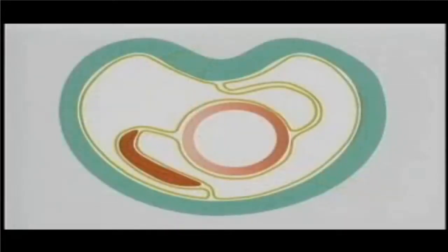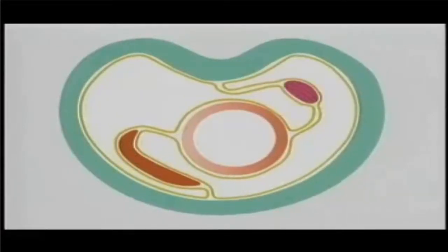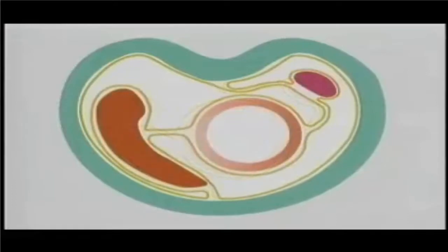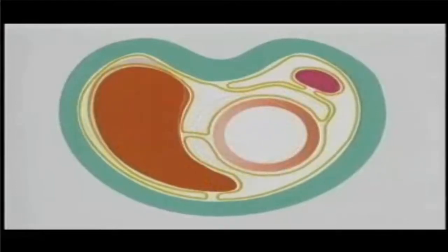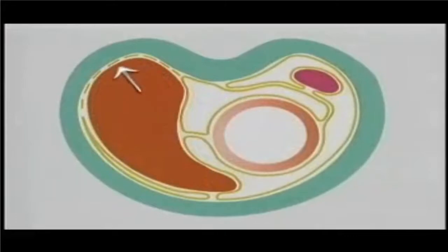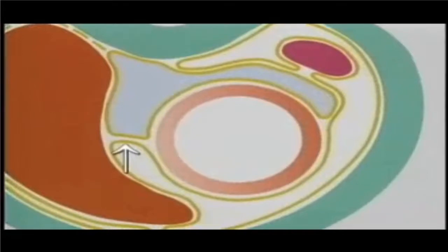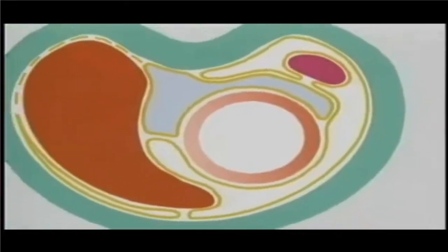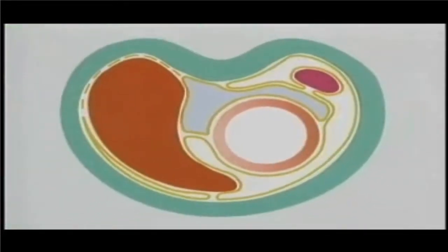The liver develops in the ventral mesogastrium. The spleen develops in the dorsal mesogastrium. The liver grows rapidly, pressing against the body wall and obliterating these layers of peritoneum. These changes produce this almost separate pocket behind the stomach — the lesser sac. This part of the ventral mesogastrium is the lesser omentum. This part of the dorsal mesogastrium will become the greater omentum. We'll follow these changes from the start in a more three-dimensional way.